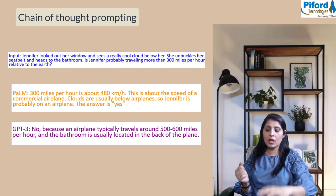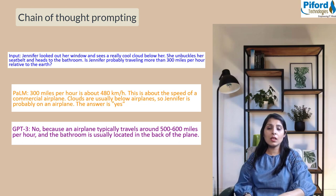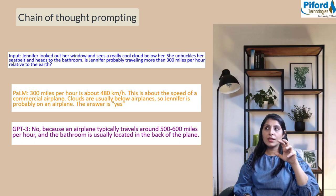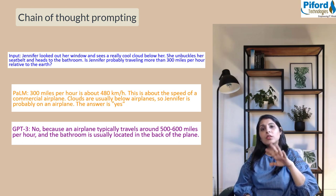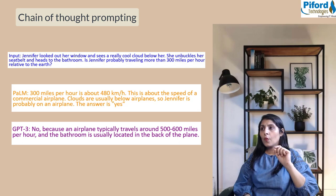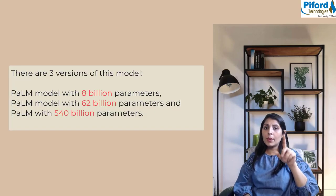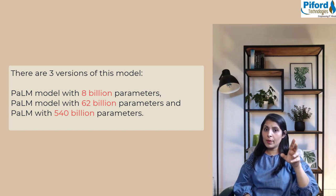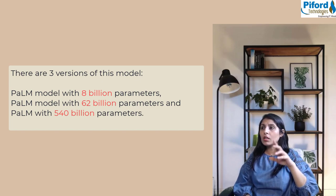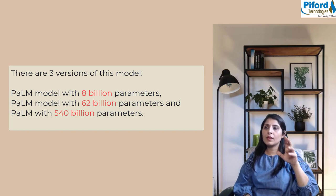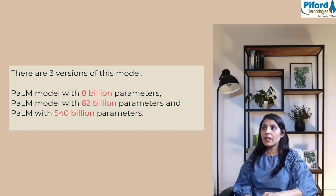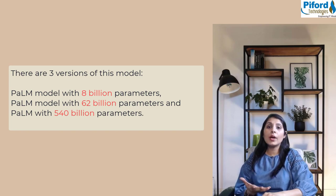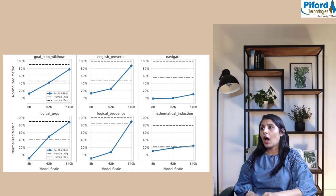Let's talk about scaling. There are three versions of PaLM: PaLM with 8 billion parameters, PaLM with 62 billion parameters, and PaLM with 540 billion parameters. Google created different versions to evaluate the benefit of scale.